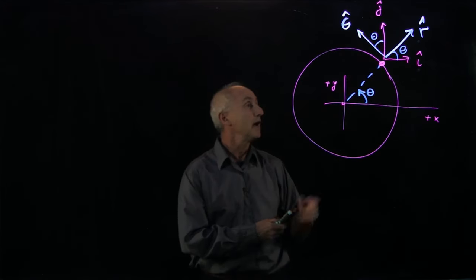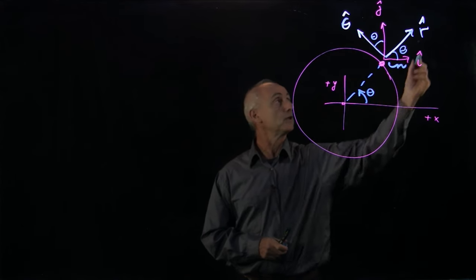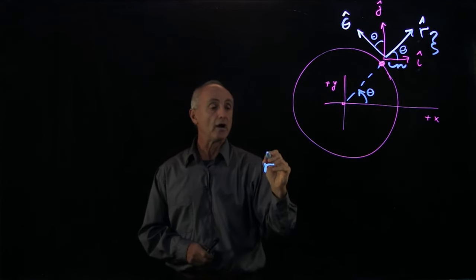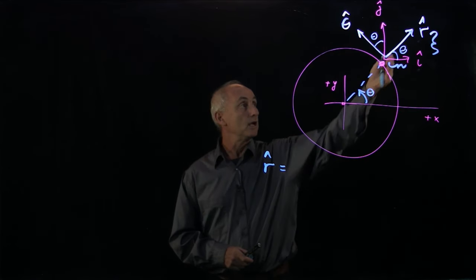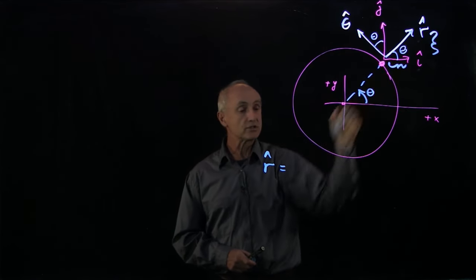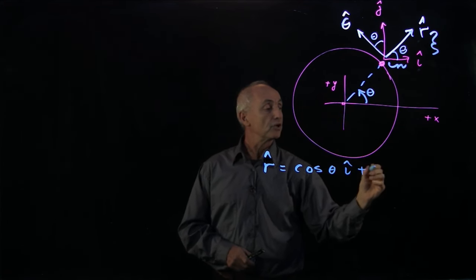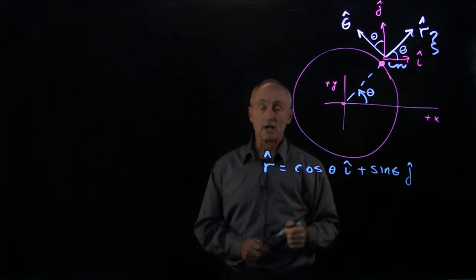Let's begin with r hat. As you can see in the diagram, r hat has a horizontal component and a vertical component. So what we have is r hat. It's a unit vector, so its length is 1. Its horizontal component is adjacent to the angle. So that's cosine of theta i hat plus sine of theta j hat. The vertical component is opposite the angle.